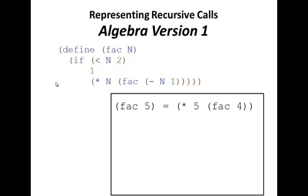Another version can rely heavily on algebra. So here, if I'm tracing what FAC of five is, I can say, well, that doesn't meet the requirements. N is greater than two, so it comes to the recursive call, and I can plug in the value of N, so what I get is times five of FAC of four.